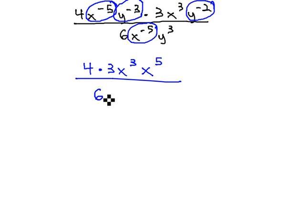In the denominator, we have 6, a y cubed, and we move x to the negative 5th down as x to the 5th, y to the negative 3 down to y cubed, and y to the negative 2 down, giving us y squared.